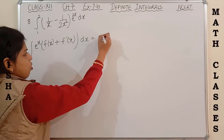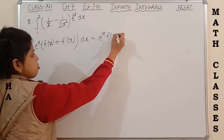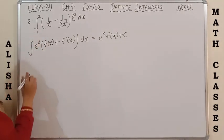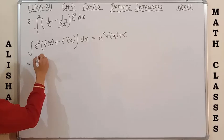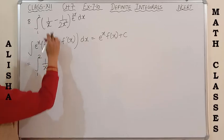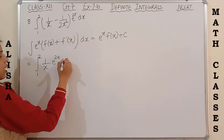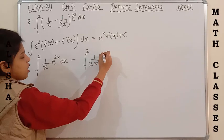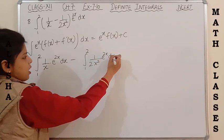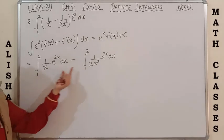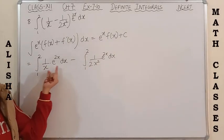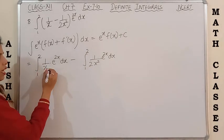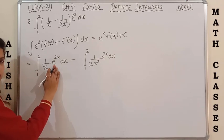The formula for e^x[f(x) + f'(x)] is e^x × f(x) + c. This we have done in integration. It can be written as: integration from 1 to 2 of (1/x) × e^(2x) dx minus integration from 1 to 2 of 1/(2x²) × e^(2x) dx. This is the function and this is its derivative, so we don't need to solve the second integration separately.